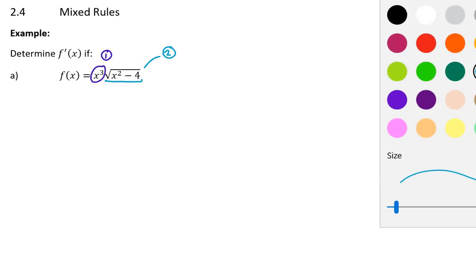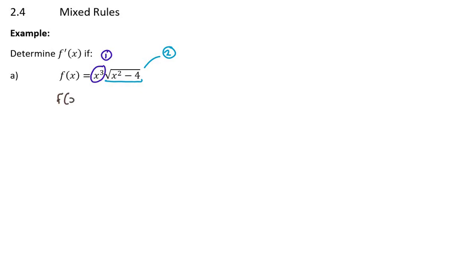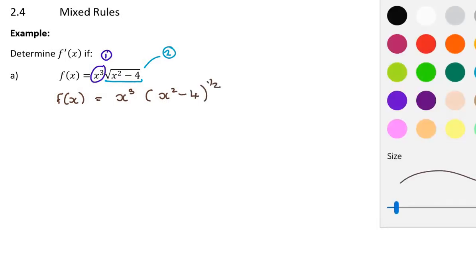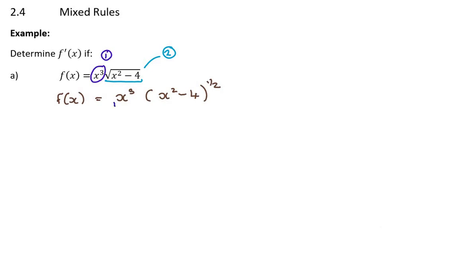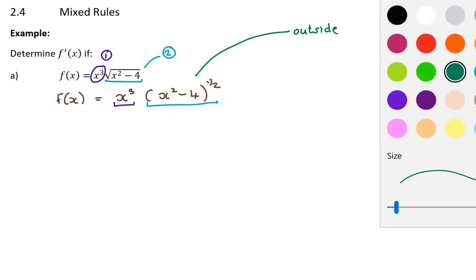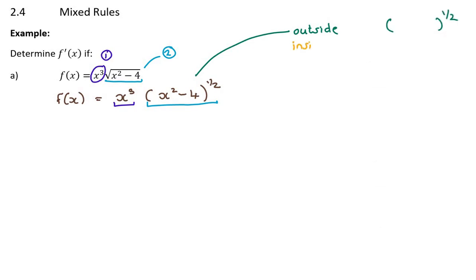In order to set this up, I'm going to rewrite f(x) before I differentiate as x cubed — function number one — times x squared minus four to the power of a half. So function number one is in dark blue and function number two is in light blue. Function number two has an outside function, which is something to the power of a half, and an inside function, which is x squared minus four.